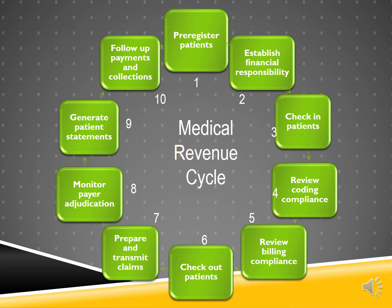The remainder of this presentation will focus on reviewing billing compliance, checking patients out of the clinic, preparing claims, and reviewing insurance payments to the practice. Step 9 of the revenue cycle encompasses sending statements to our patients for payment on their portion of the bill. If necessary, administrative staff might need to follow up with payers and patients and even pursue collection efforts if the bill is long overdue. So very briefly, this is the medical revenue cycle.